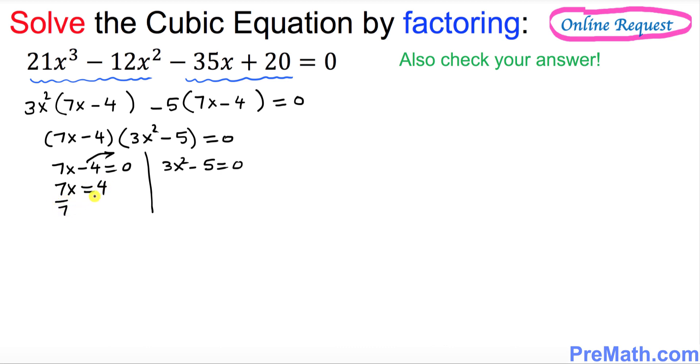Divide both sides by 7, so x turns out to be 4 over 7 as one of our solutions.